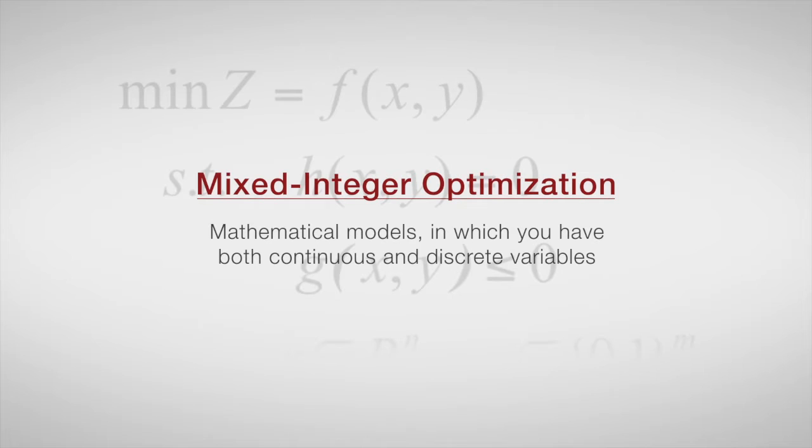Mixed-integer optimization means mathematical models in which you have both continuous and discrete variables. The idea being that you want to model and select, for example, the topology with 0-1 variables and select parameters with continuous variables, typically to minimize a given objective function, and you need to meet equality and inequality constraints.